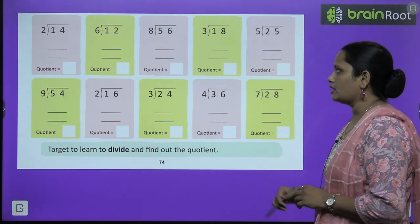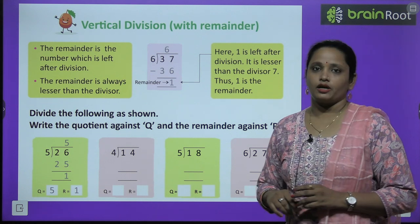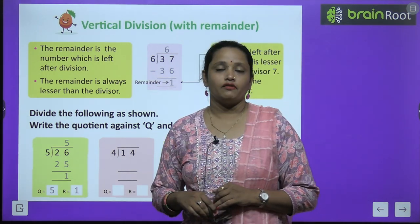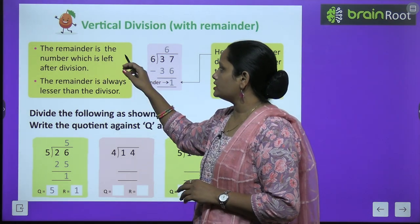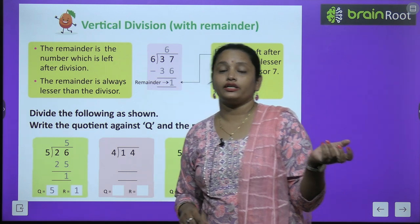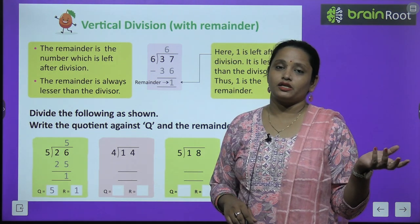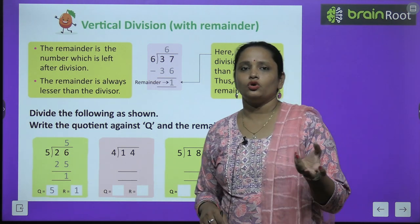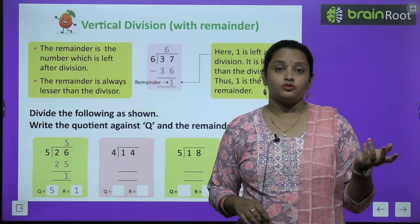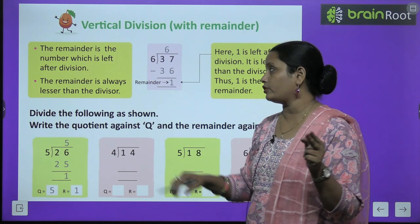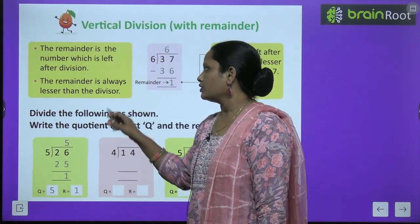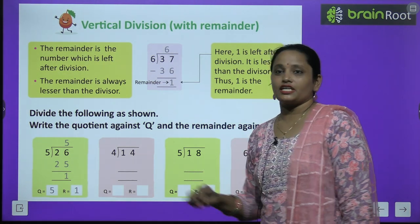Next is vertical division with remainder. Until now, when we were subtracting, we were getting a remainder of 0. But here, now we will get a remainder. The remainder is the number which is left after division. Sometimes, I give you 20 toffees and say divide them among 6 children. So you divided 20 toffees among 6 children. You gave a particular amount equally to all children.